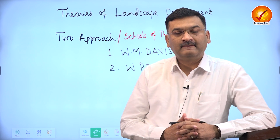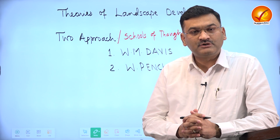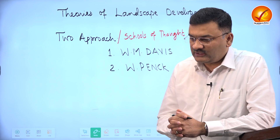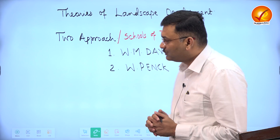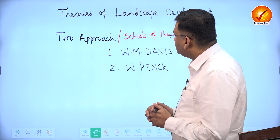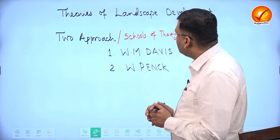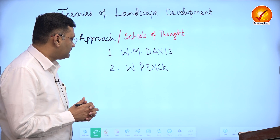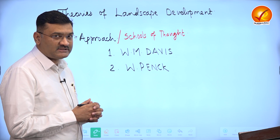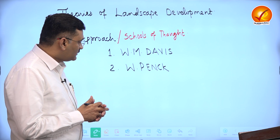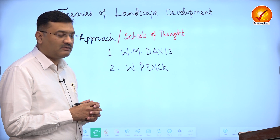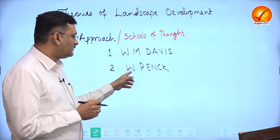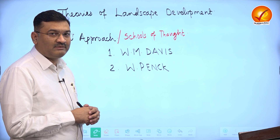Today we are going to discuss one of the important topics of geomorphology related to the evolution of landforms. We have two approaches or schools of thought, also described as theories of landscape development. These two schools of thought are related to two important geographers: William Morris Davis and Walter Penck. Davis laid the foundation of this theory, and after critical evaluation of the Davisian model, the second model — the Penckian model of landscape development — was given.